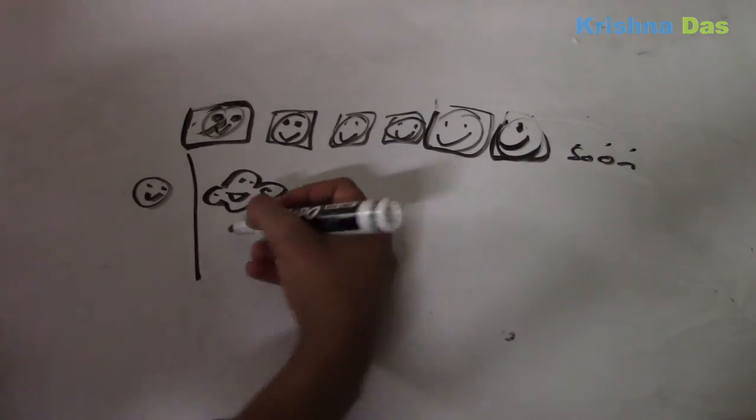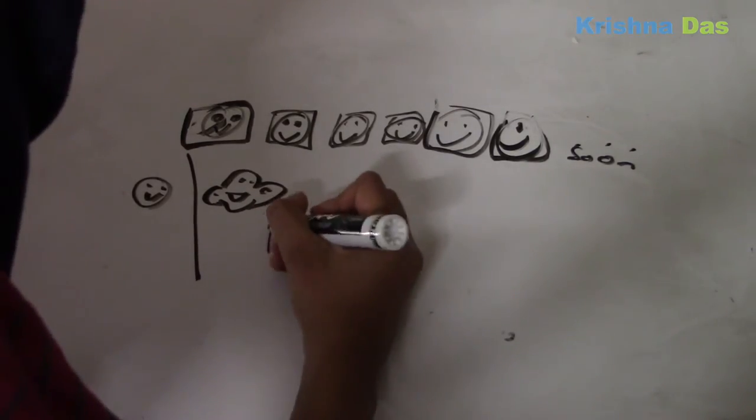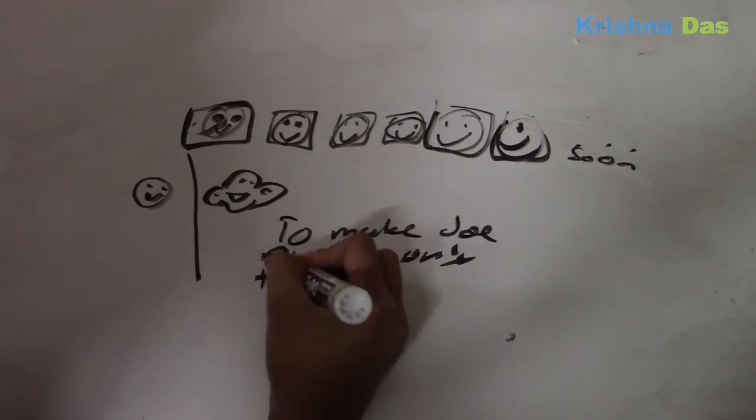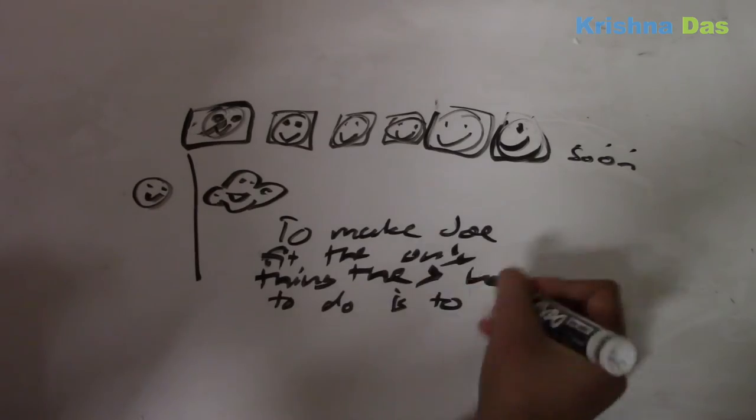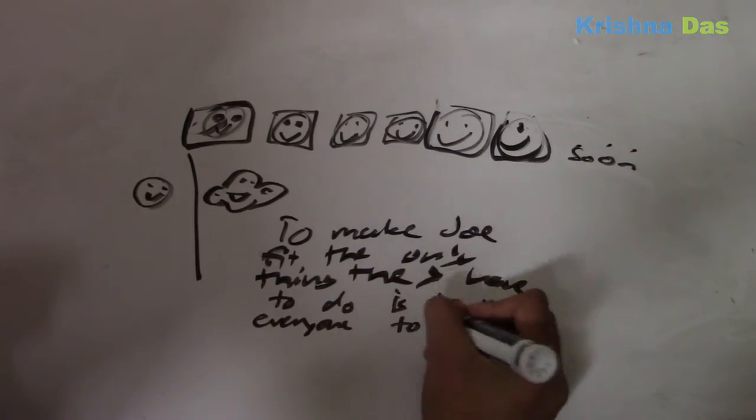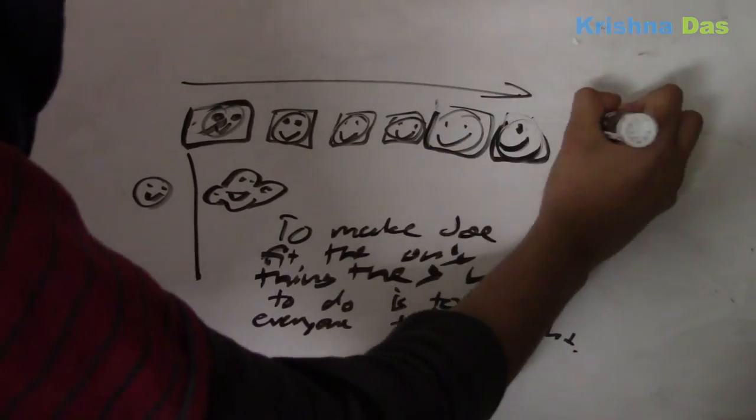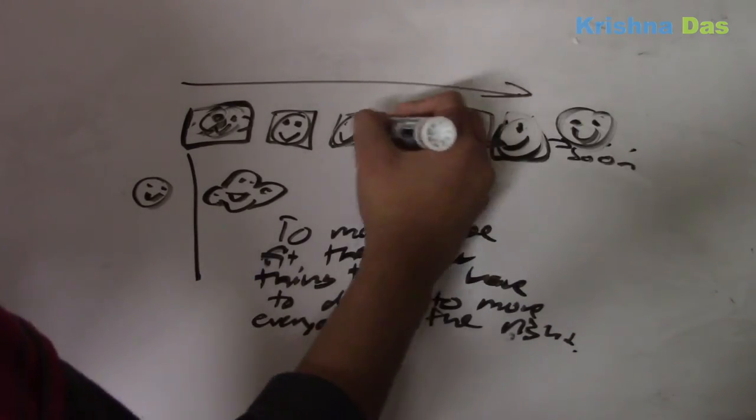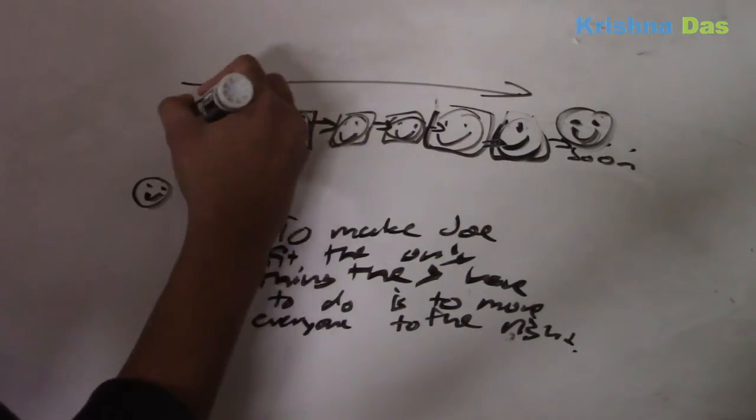So eventually, the person thinks about it for a minute or so and says, well, if we move everyone to the right, we can make space for you, Joe. That would take a long time, because there's an infinite number of rooms. So everyone moves to the right.